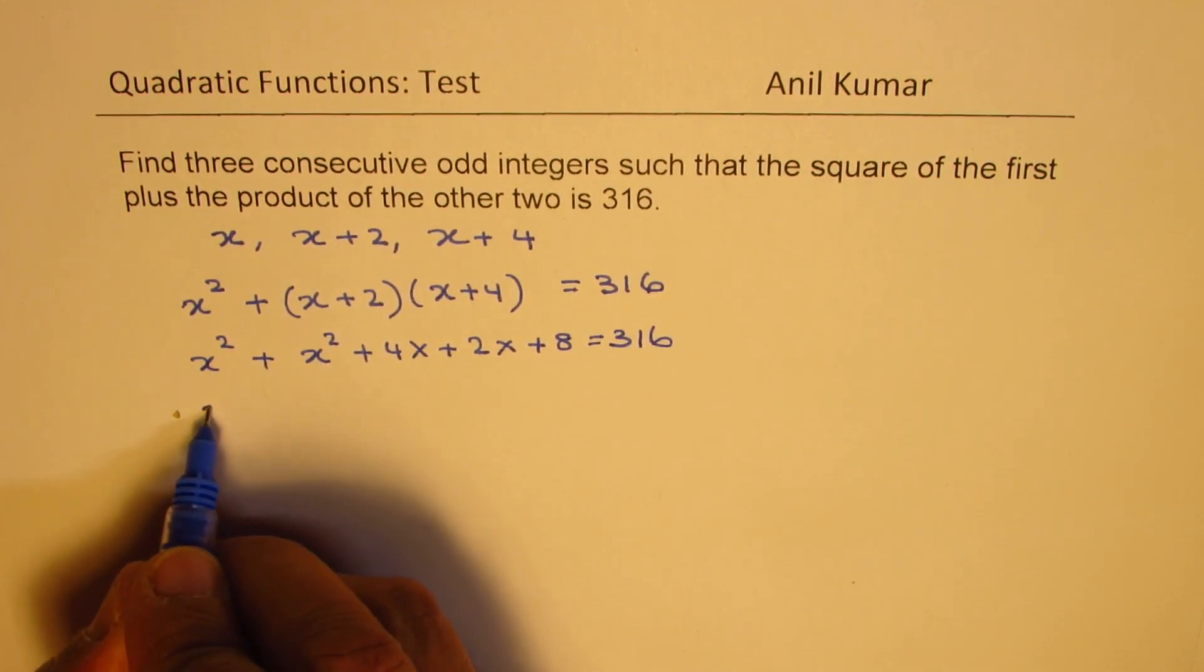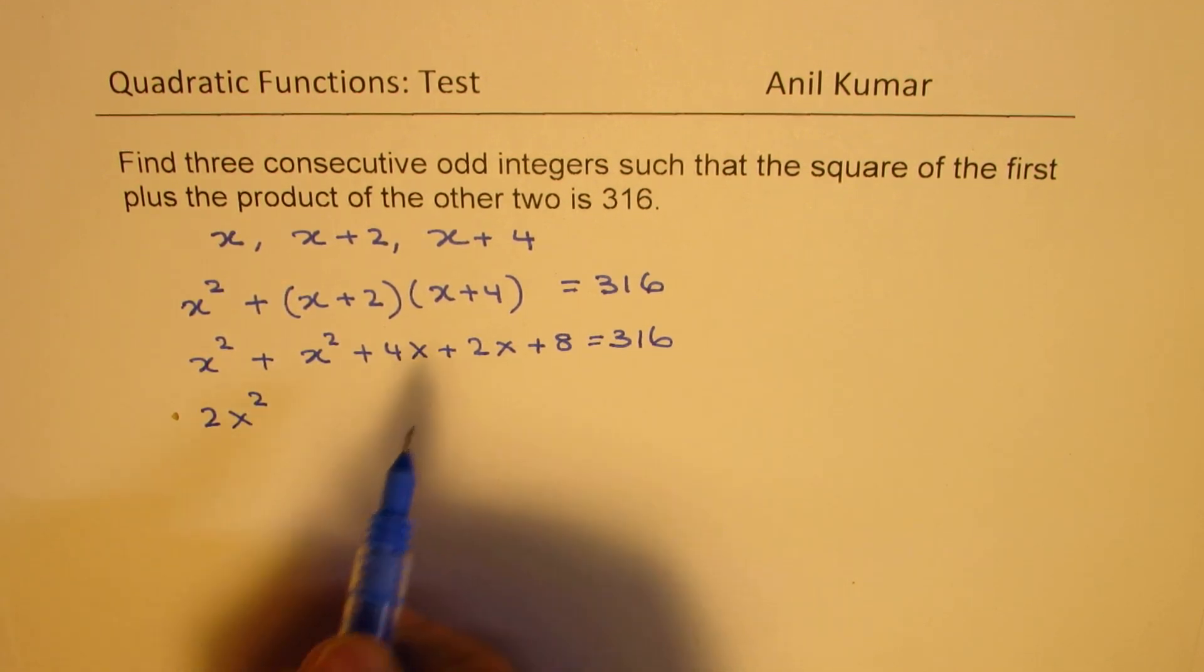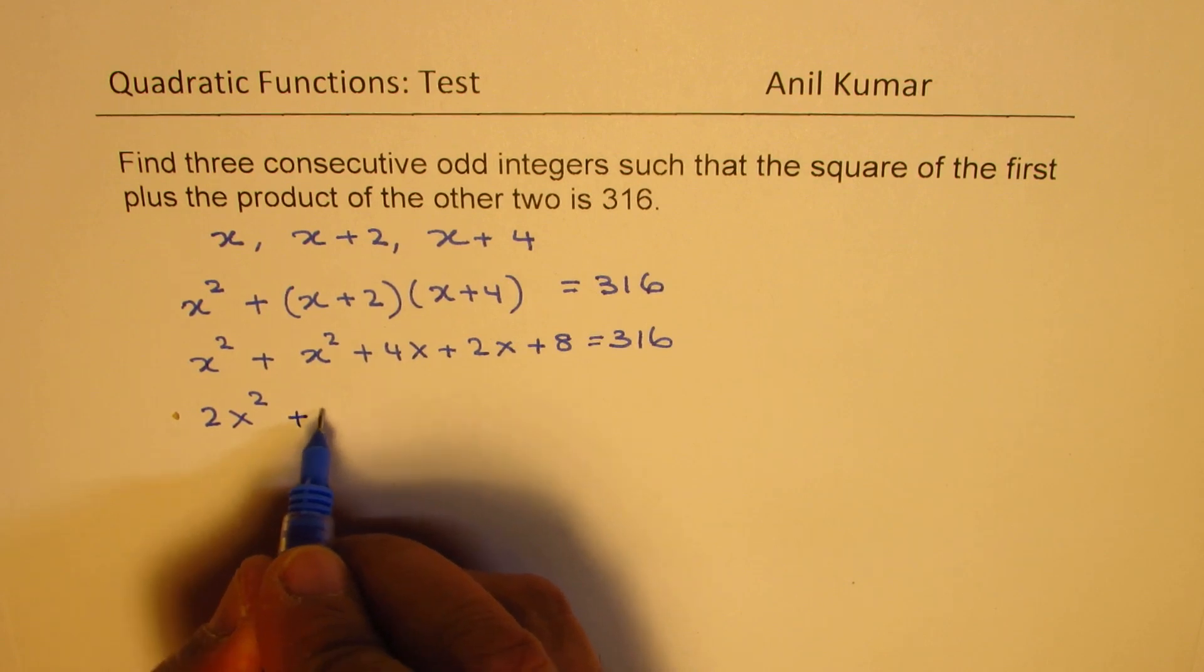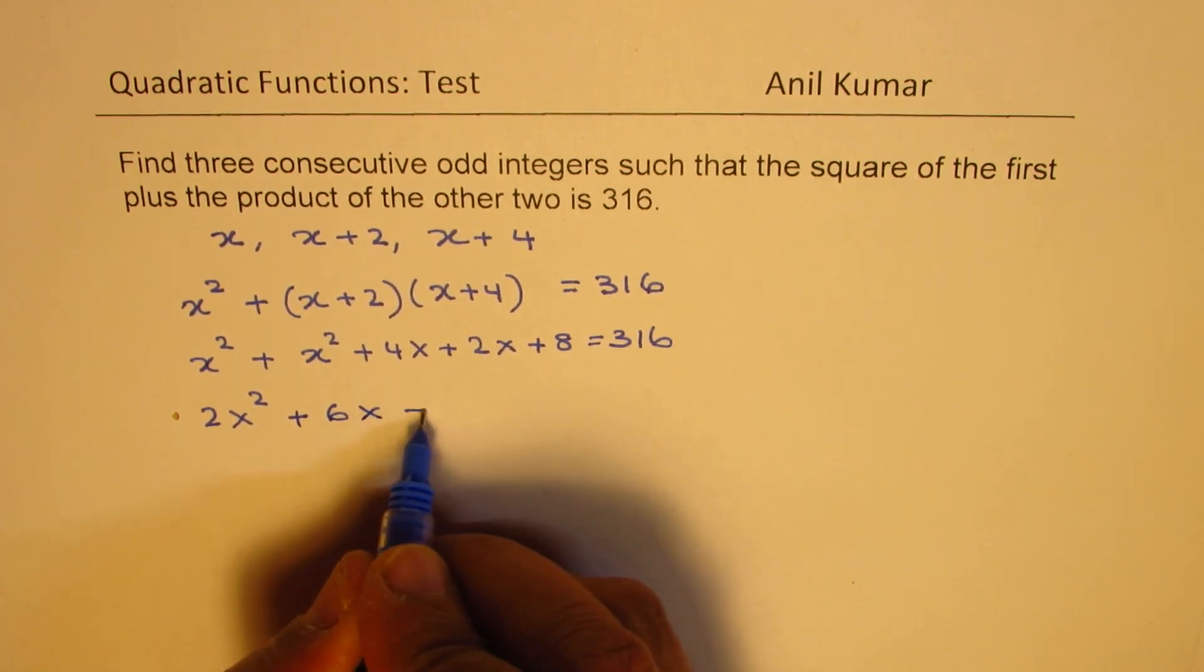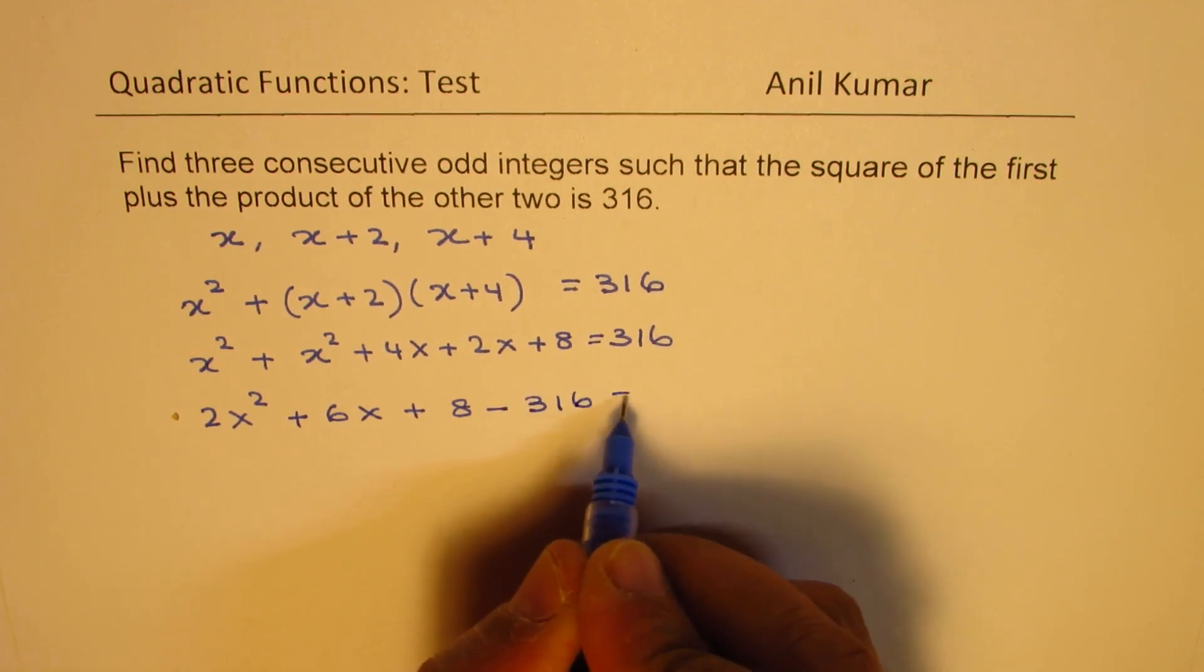So x squared plus x squared is 2x squared. And then we have 4x plus 2x as 6x.